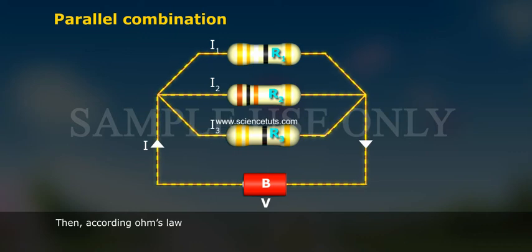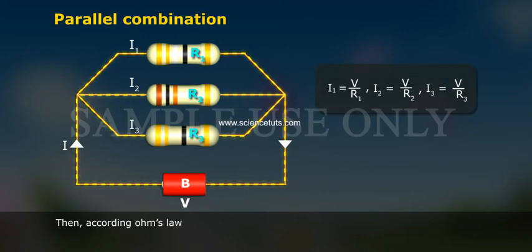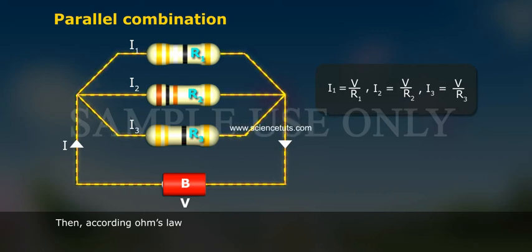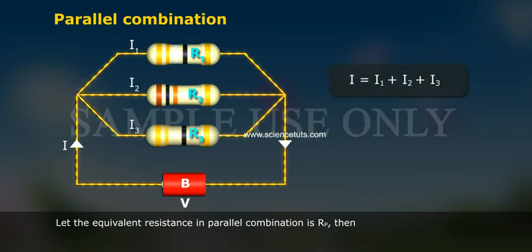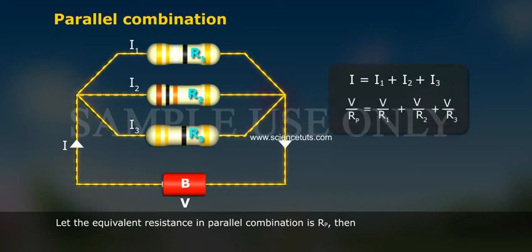Then, according to Ohm's law: I1 = V/R1, I2 = V/R2, I3 = V/R3. Therefore, I = I1 + I2 + I3. Let the equivalent resistance in parallel combination be Rp. Then I = I1 + I2 + I3, so V/Rp = V/R1 + V/R2 + V/R3.